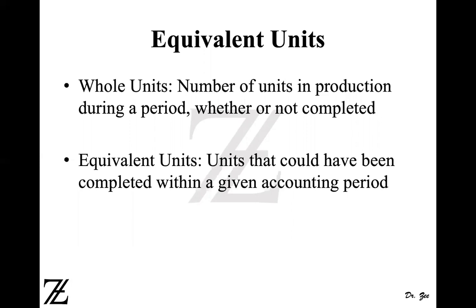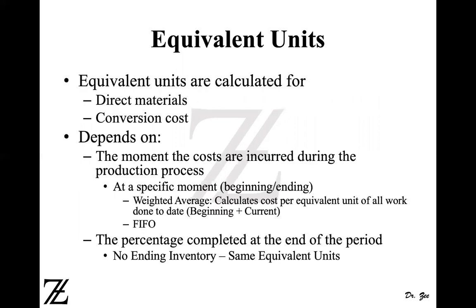Your equivalent units in this case is one unit. Because if you had worked on only one unit throughout the day, you could have finished that one unit. But you worked on two units, finishing each halfway — 50% and 50%. So none of the units are completed, but your equivalent units are still one unit. That's how you explain the equivalent units.